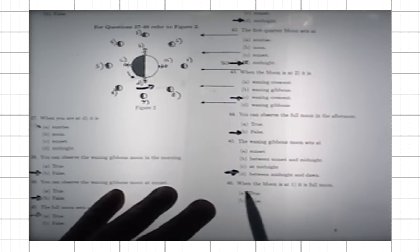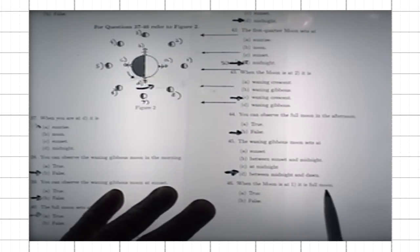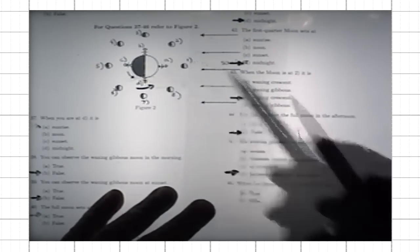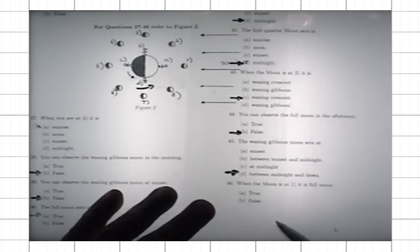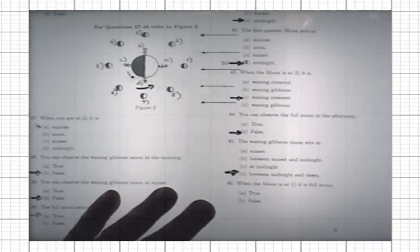And then the easy one: when the moon is at position one, it is the full moon — true or false? False, of course.